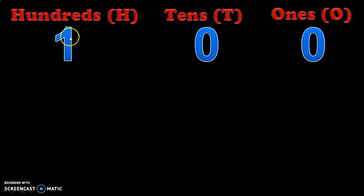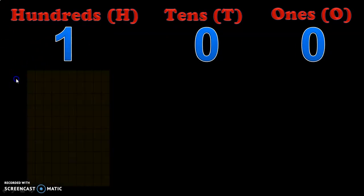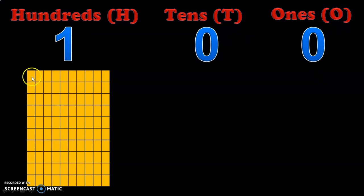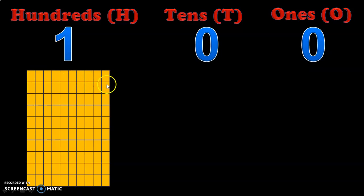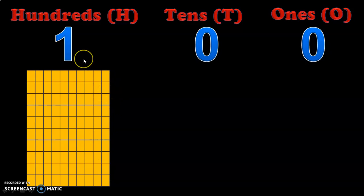In one hundred we have one hundred, zero tens, and zero ones. Let us see how to represent one hundred, or ten tens. Here we have the first ten: one, two, three, four, five, six, seven, eight, nine, ten. We need ten groups of ten to represent one hundred. So this is the second ten, third ten, fourth ten, fifth, sixth, seventh, eighth, ninth, and the tenth ten — so we have ten tens representing one hundred.